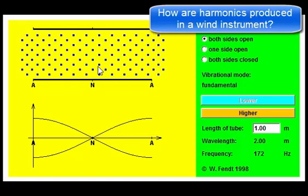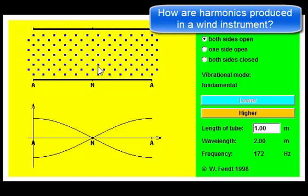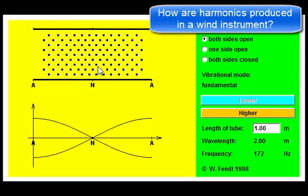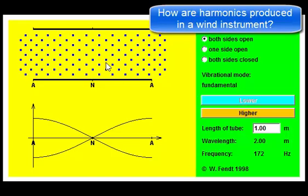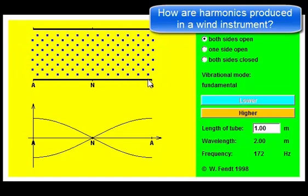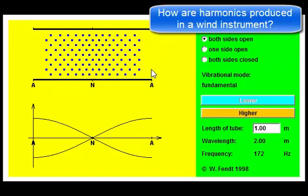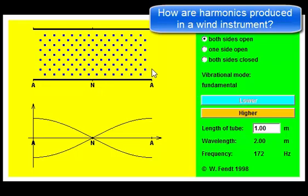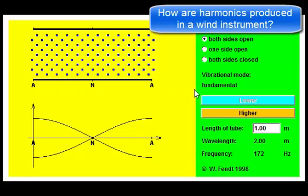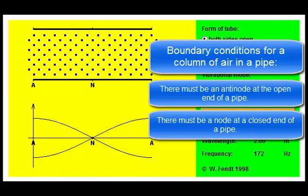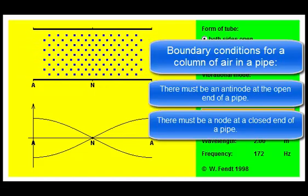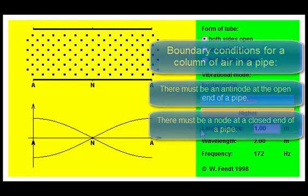We also have a different set of boundary conditions that we need to deal with. If there's an open end of a pipe, then we must have an antinode at that end. If we have a closed end of a pipe, then that end of the pipe must be a node. And that leads to a pattern of harmonics that we're going to have a look at now.